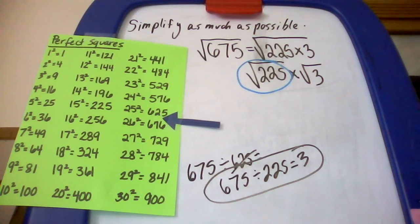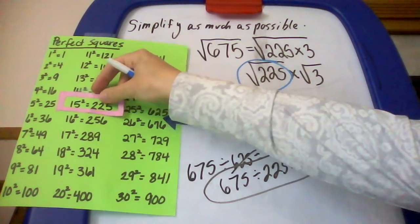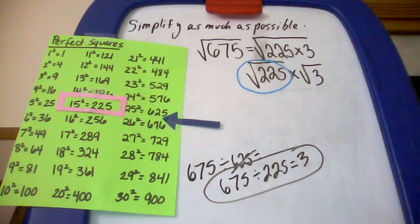Now I'm going to take and evaluate this perfect square. The square root of 225, if you go over here and look at our chart, that's 15 squared. 15 squared is 225, so the square root of 225 is 15.